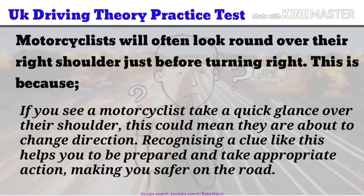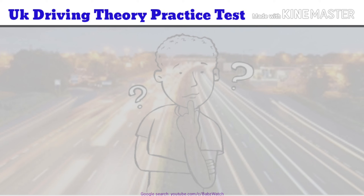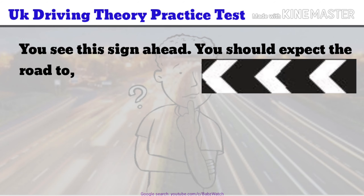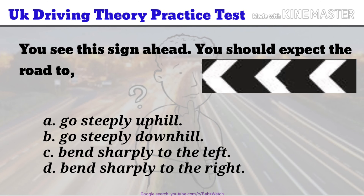UK Driving Theory Practice Test Question 16 of 50. You see this sign ahead. You should expect the road to: a. Go steeply uphill. b. Go steeply downhill. c. Bend sharply to the left. d. Bend sharply to the right. The correct answer is c.